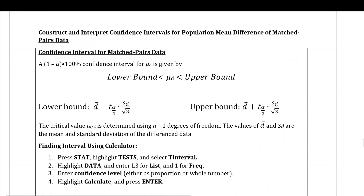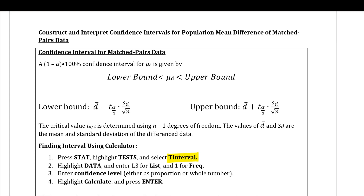We can also come up with a confidence interval for the mean difference of matched paired data. Since we're just dealing with the difference list, it's almost as if we just have one population to deal with. To find confidence intervals for one population mean we're going to be using t-interval.